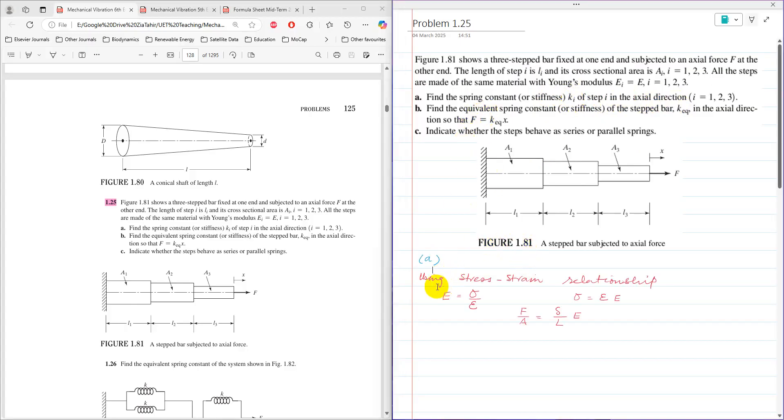For part A, the best option available is using the stress-strain relationship. So E is Young's modulus, which is equal to stress over strain, or stress is equal to strain times E.